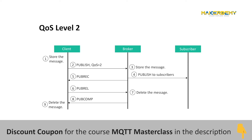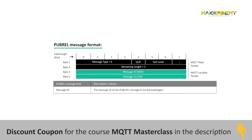To make sure that a message is sent only once in QoS level 2, MQTT has provided two more packets. The sixth packet is the PUBREL packet, also known as the publish release packet. It is sent by the publisher to the broker when the publisher receives a PUBREC packet from the broker. It doesn't have any payload.